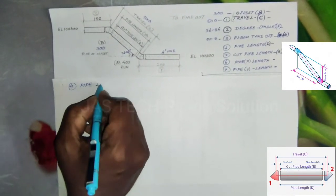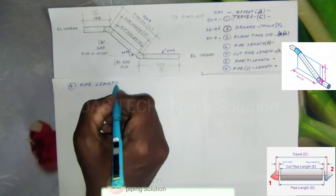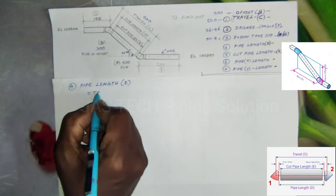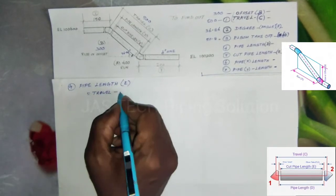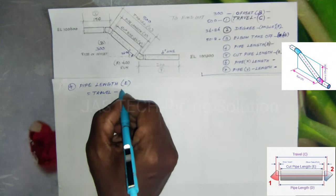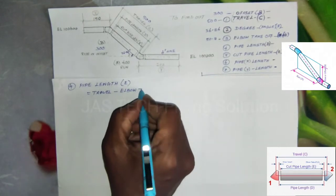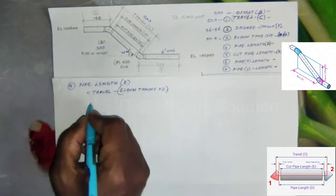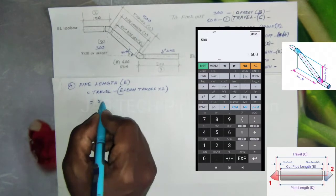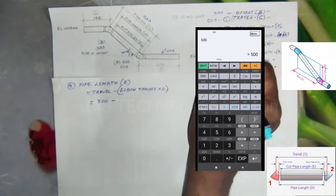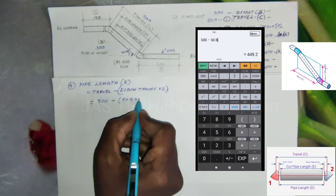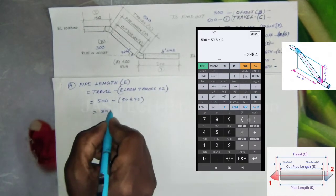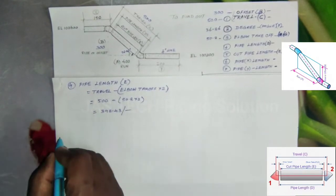Number 4, Pipe Length. Pipe Length E equals Travel minus Elbow Takeoff times 2. So our Travel equals 500, minus Elbow Takeoff 50.8 multiplied by 2. The result is 398.43.